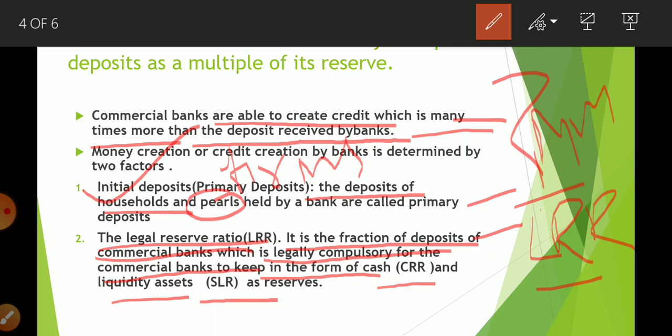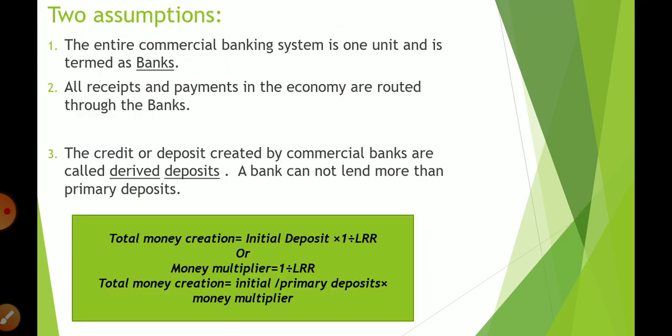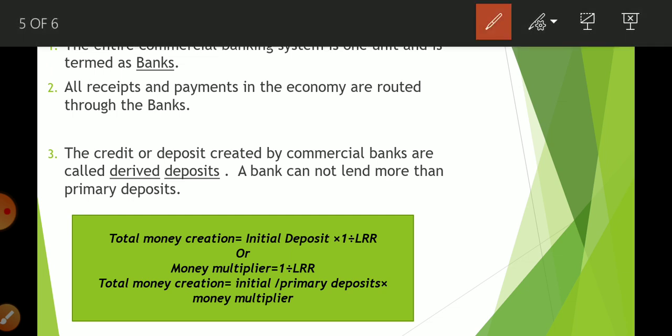There are two basic assumptions for credit creation. First, the entire commercial banking system is considered as one unit called 'banks' — there is no SBI, Punjab National Bank, Bank of Baroda; all banks are considered as one. Second, all receipts and payments in the economy are routed through the banks — there is no cash transaction.